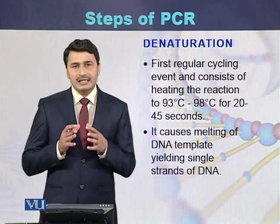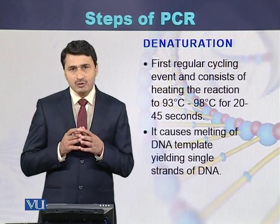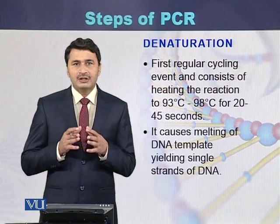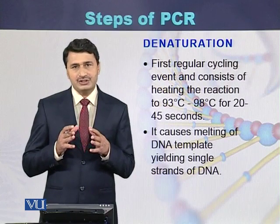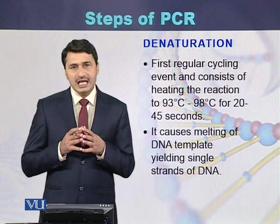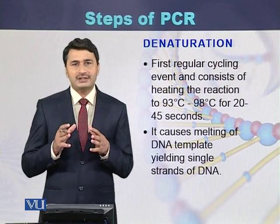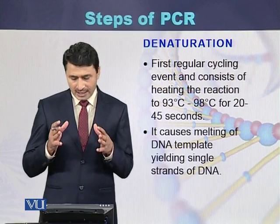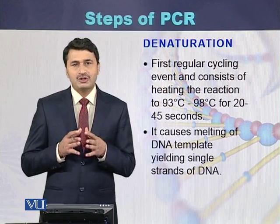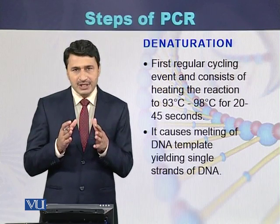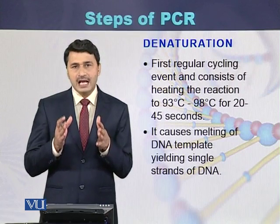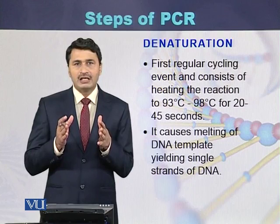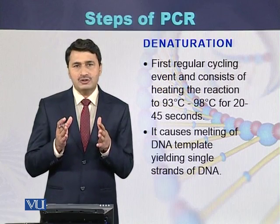Once the initial denaturation is done, regular cycling of the PCR starts, and the first cycling step is again denaturation. During this step, DNA is kept at 93 to 95 degrees centigrade for 20 to 45 seconds. During this step, the double-stranded DNA separates into single-stranded DNA, which is called denaturation.